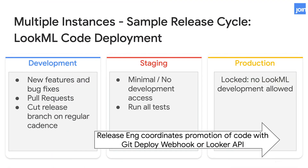Starting in the dev instance, developers work on new features and bug fixes. They create pull requests and when pushing commits to master, once those are approved, those changes go into the master branch where the release engineering team will cut a release branch and deploy that to the production mode of the staging instance. The staging instance is where all the tests are run — development typically does not occur there. Once all tests have passed, the release engineering team deploys this branch to the production instance.